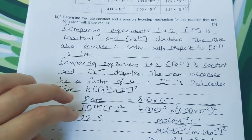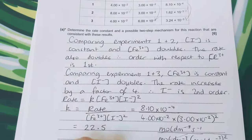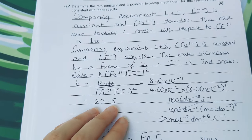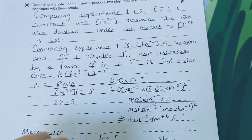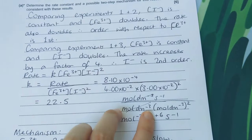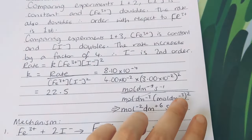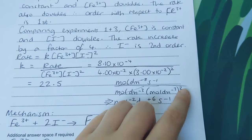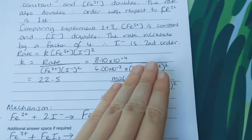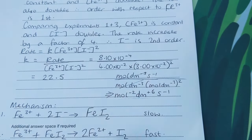We rearrange for k using values from any one of the three experiments — any row gives the same rate constant. To get the units, plug them into the rate expression: mol dm⁻³ s⁻¹ divided by mol dm⁻³ times (mol dm⁻³)². Cancel what's the same on top and bottom; whatever's left on the bottom moves to the top with sign changes, remembering to multiply — giving mol⁻² dm⁶ s⁻¹.